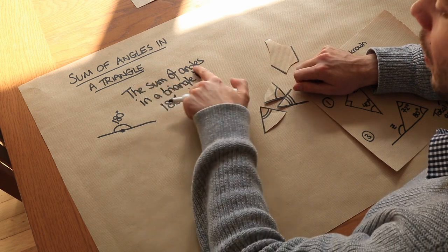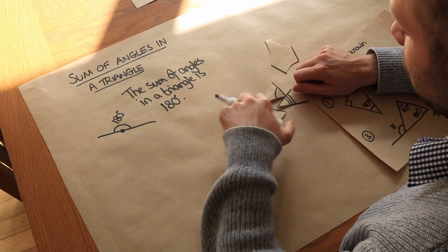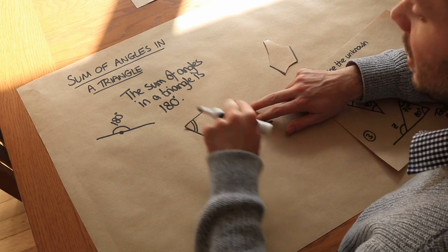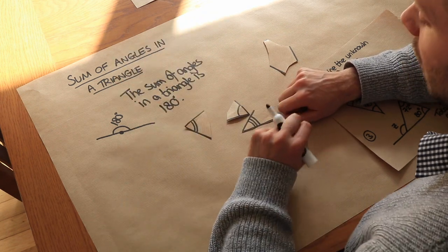And by the way don't say the angles in a triangle are 180 degrees because that would be saying that each angle of the triangle is 180 degrees. It's the sum of the angles is 180.